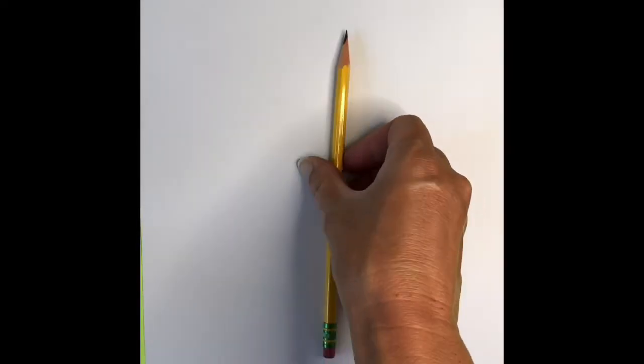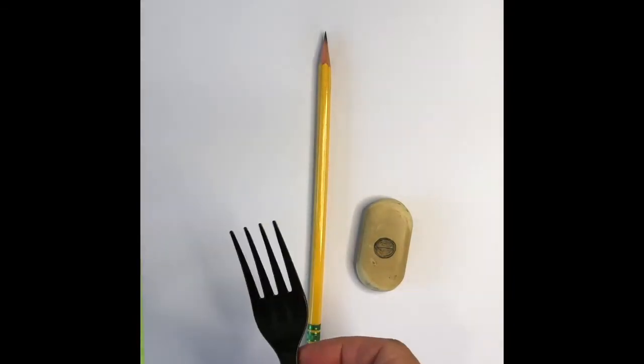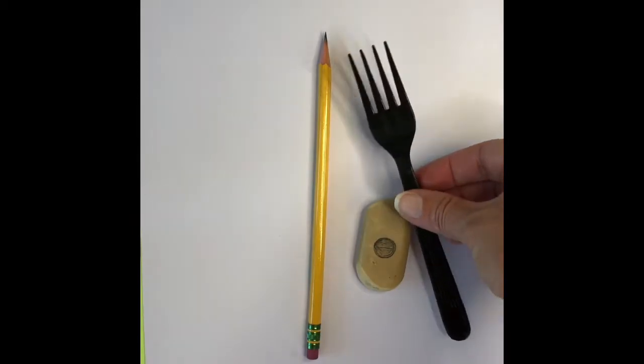Supplies you'll need for this project: a big white sheet of paper, a pencil, and an eraser. You'll need a fork - make sure you ask your grown-up which fork you should use. This one is just a plastic one I can throw away when I'm done with.